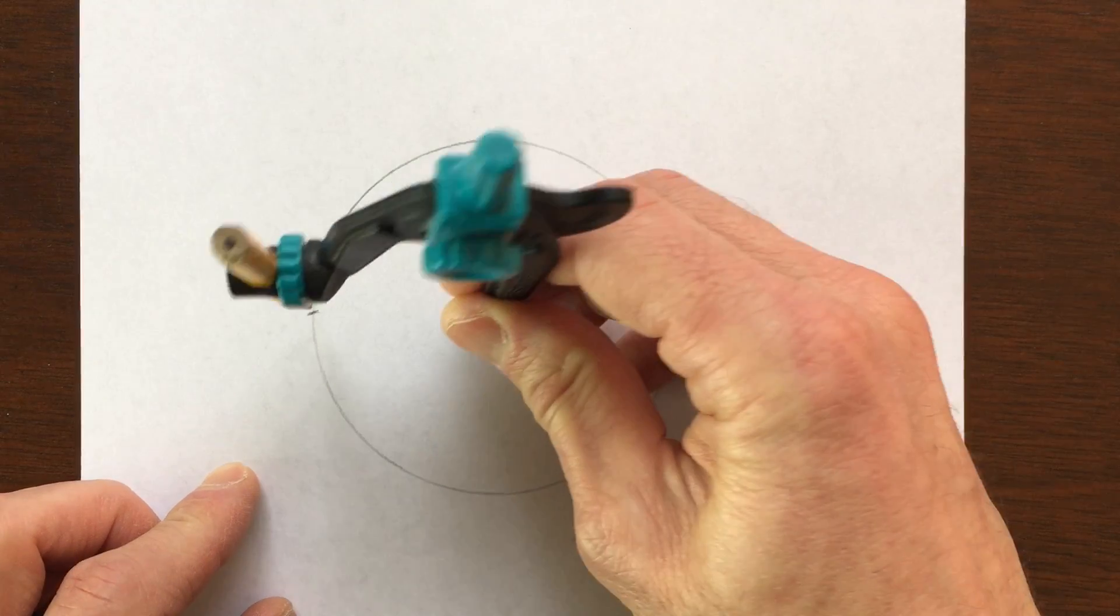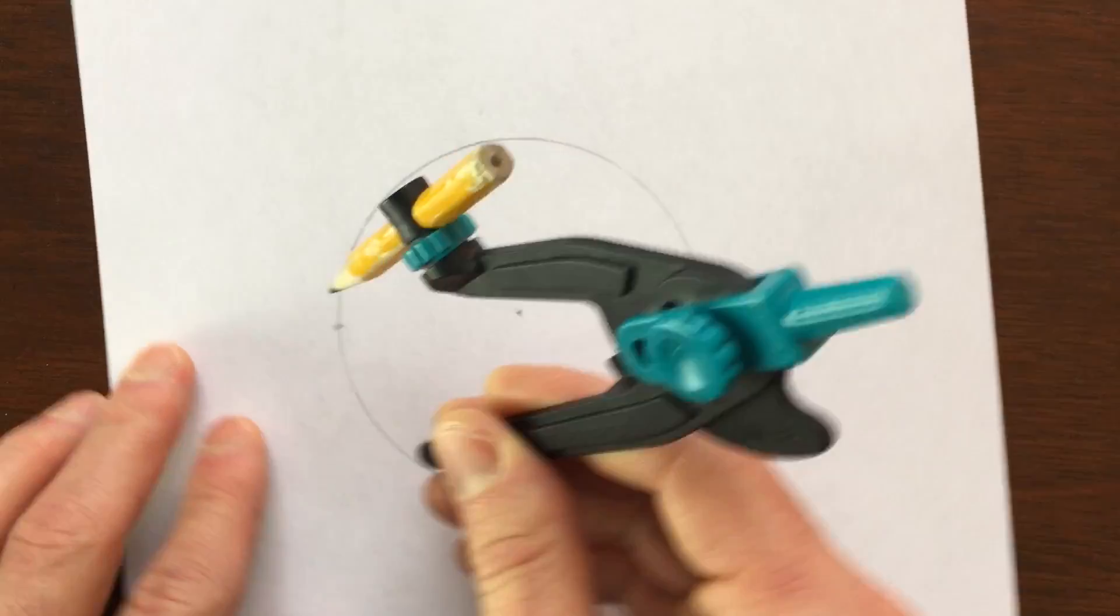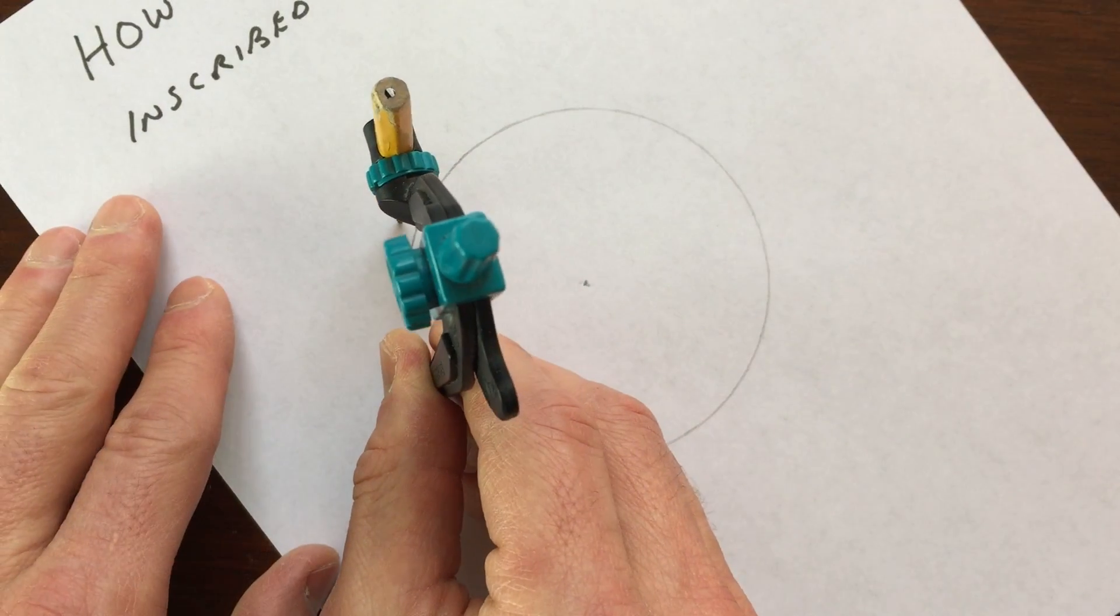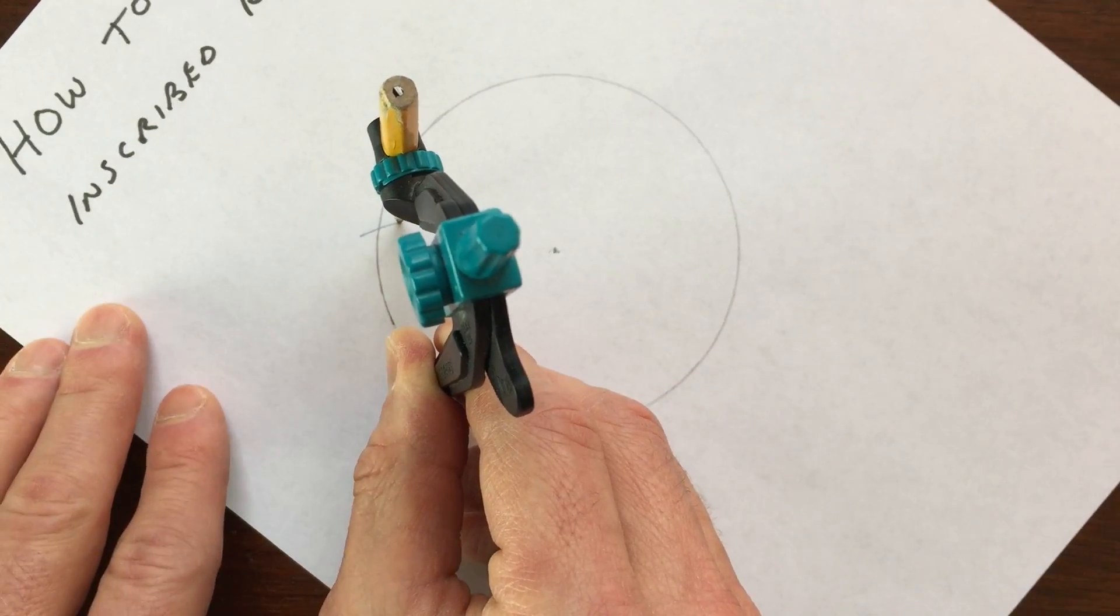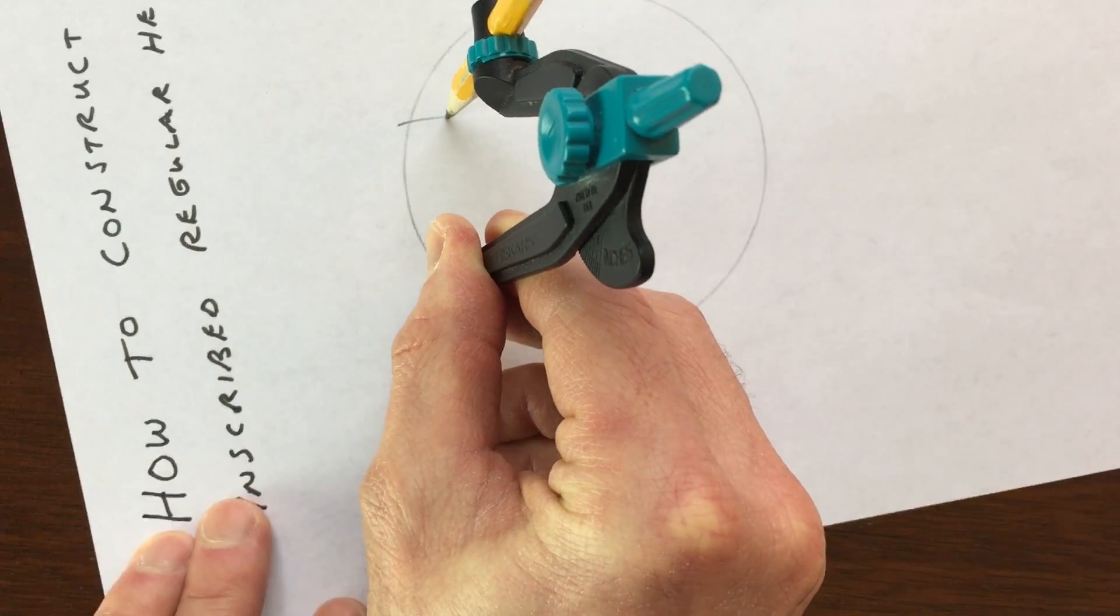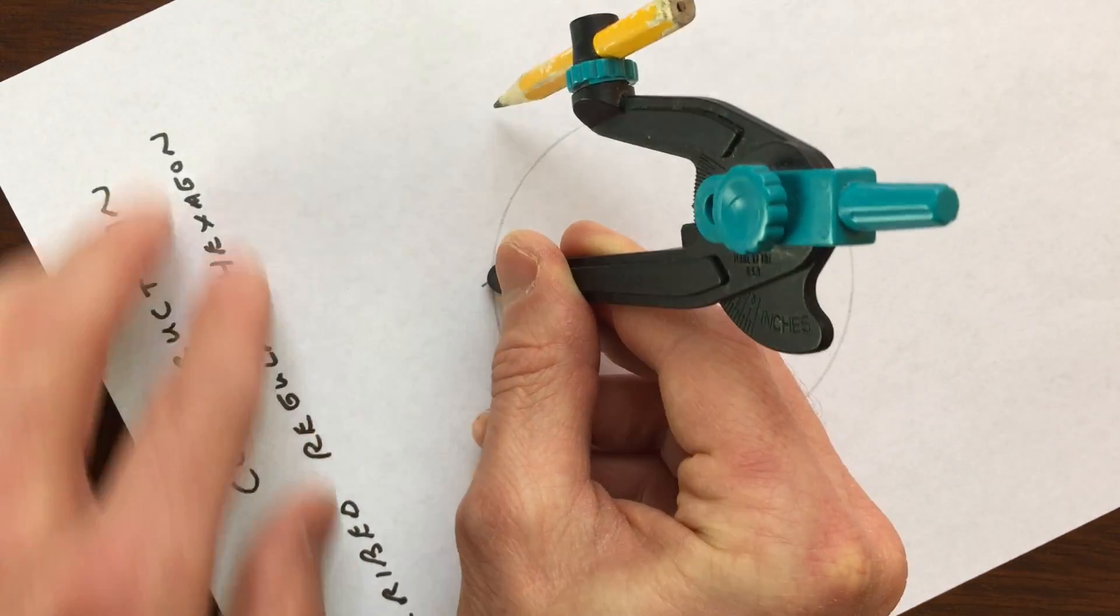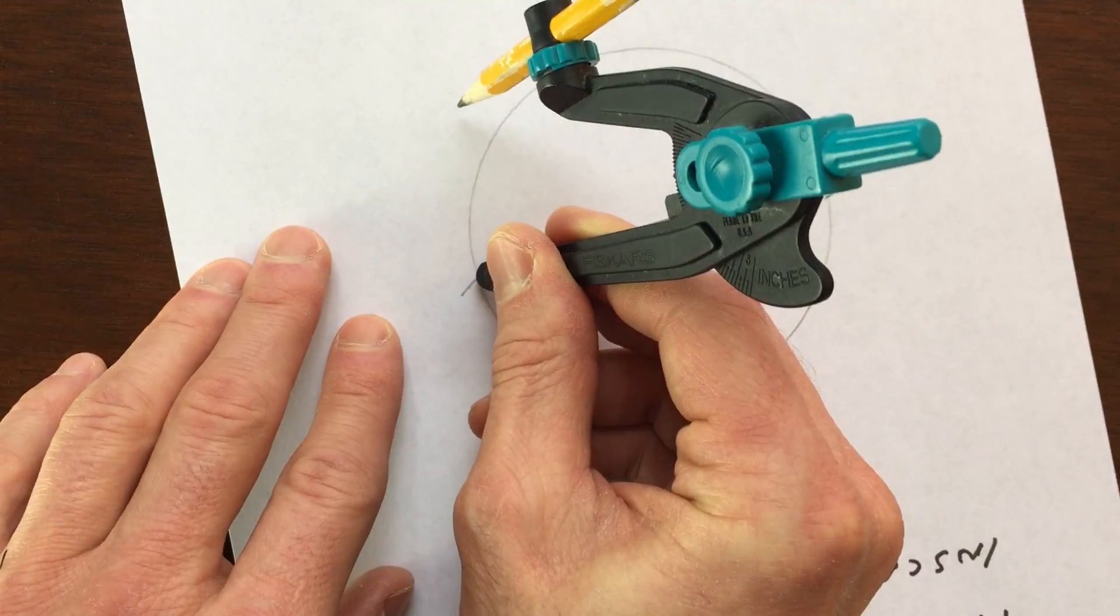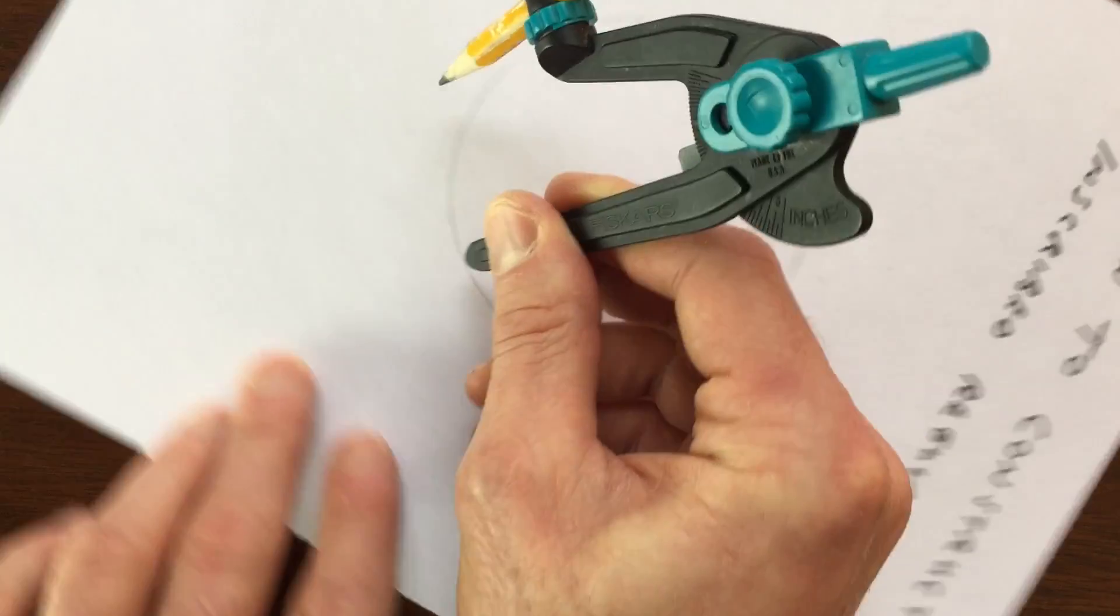Then what you're going to do is use the compass to draw arcs around the circle. So I'm going to do that right now. We're going to go ahead and make these arcs, then I'm going to go to the next point and make another arc, go to the next point and make another arc, and you just work your way around the circle like that.